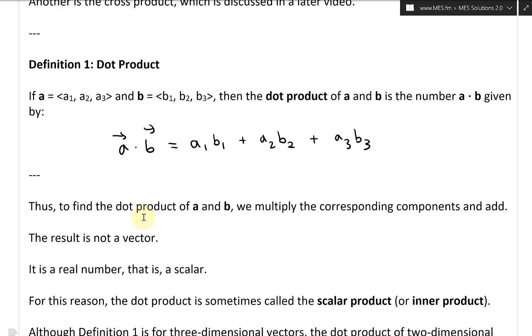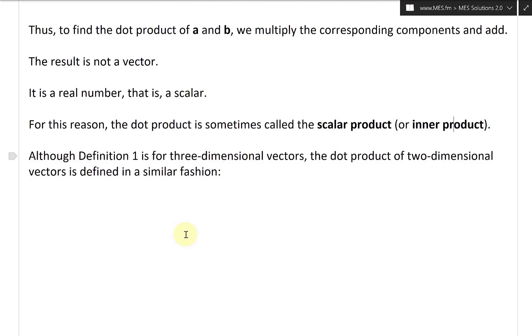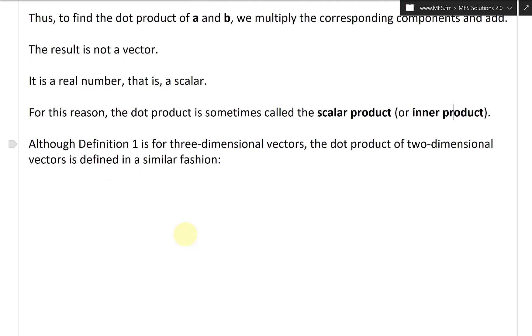And although definition one is for three-dimensional vectors, the dot product of two-dimensional vectors is defined in a similar fashion. So if you have two two-dimensional vectors with components a1, a2 dot product b1, b2, this just becomes a1 b1 plus a2 b2. You can do this for any number of dimensions.